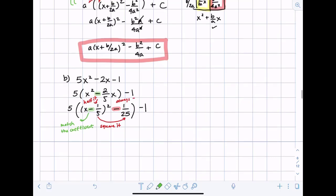Okay so now let's clean this up. Distributing that five in we get five times x minus one-fifth squared minus one-fifth minus one. And there's our completed square version of this.